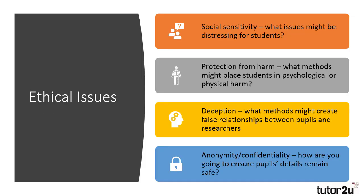There are ethical issues with conducting research with pupils as well. Aside from needing DBS clearance and gatekeeper access, researchers may be investigating issues that are socially sensitive for students, such as bullying, material deprivation, teacher labelling, and racism, so researchers need to be sensitive to the feelings of students. Protection from harm is another consideration. Researchers might observe pupils being physically or emotionally harmed by the actions of their peers when investigating anti-school subcultures, bullying, or even teachers through racism and labelling. It is their duty to look after the physical and emotional wellbeing of students. They may even cause harm, particularly if they develop a bond of trust with a student while posing as a teaching assistant or a counsellor, only to deceive them by reporting their findings in academic papers.